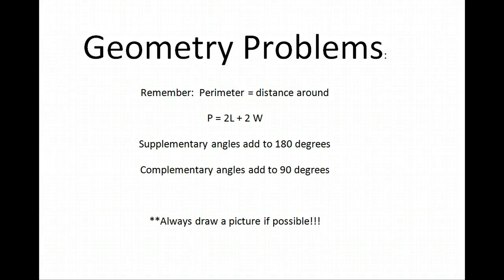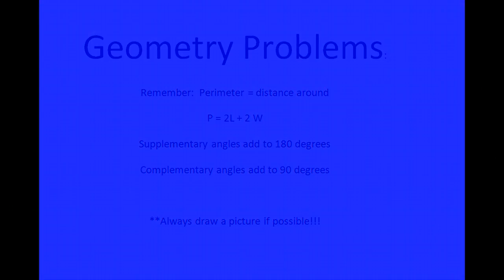In summary, for geometry problems, remember that the perimeter is the distance around. For a rectangle, it's 2 lengths plus 2 widths. For a triangle, you would just have to add the 3 sides. For supplementary angles, please remember they add to 180 degrees, and complementary angles add to 90 degrees. And always draw a picture, if possible.